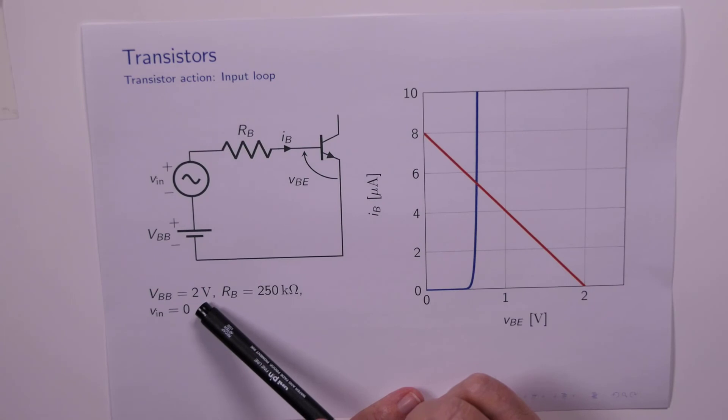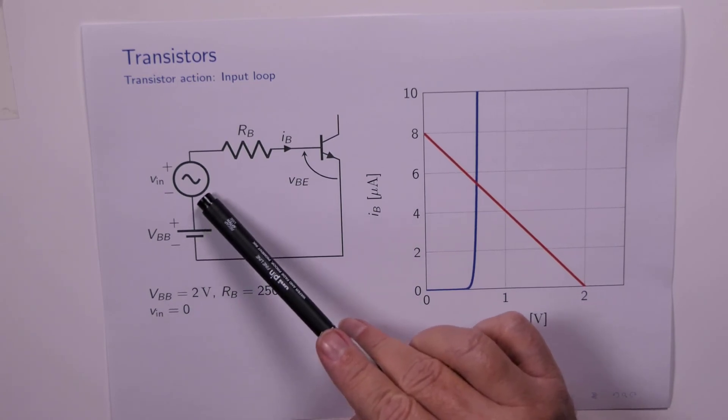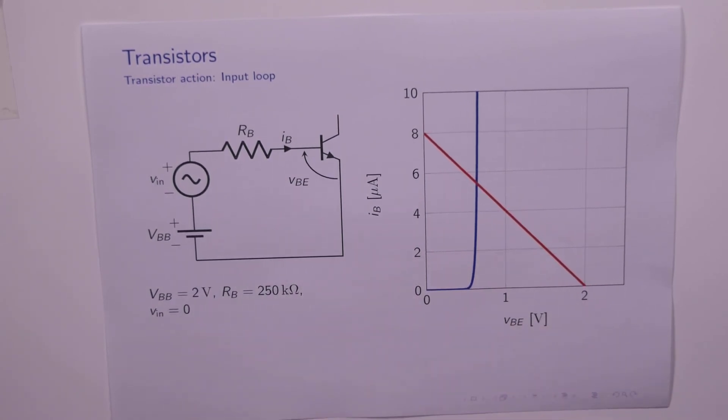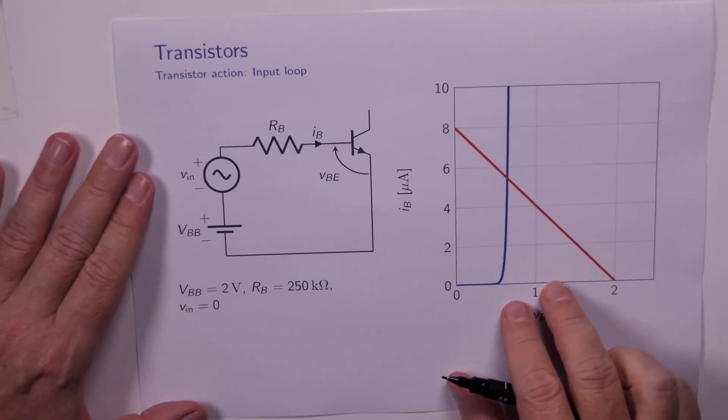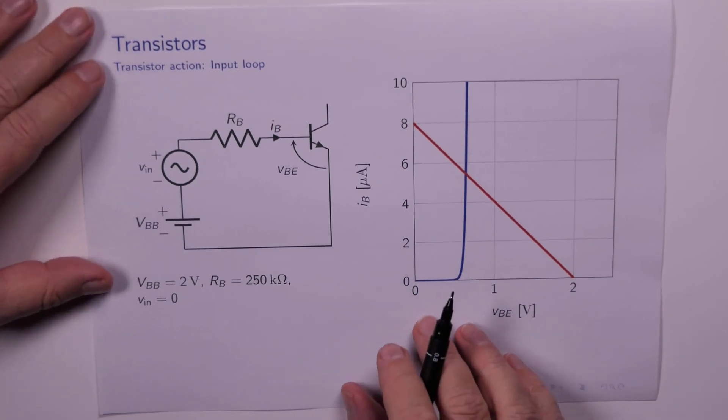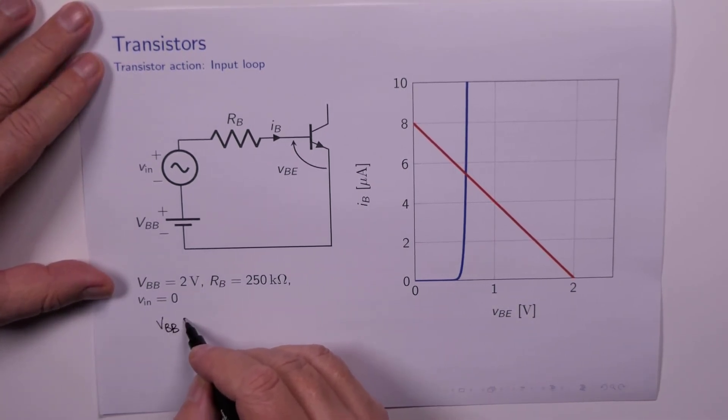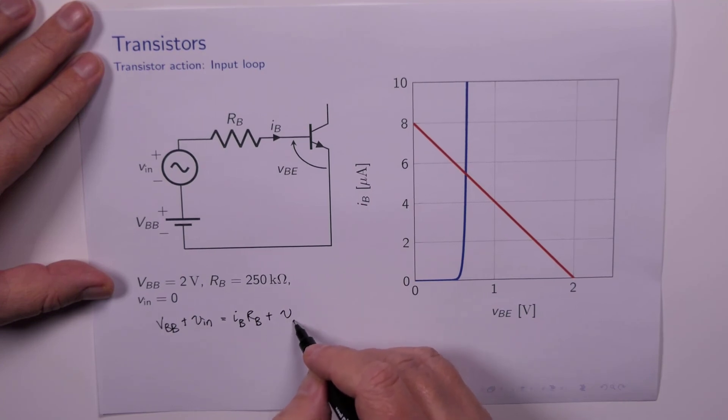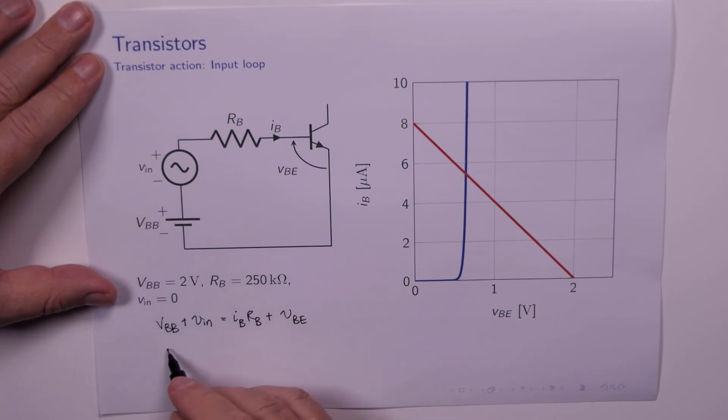I've even given some values here suggesting VBB is 2 volts, RB is 250k, and initially we're going to assume that VIN is equal to 0. Now I can write down Kirchhoff's voltage law for this input loop. I can say that VBB plus VIN equals IB times RB plus VBE. Now from this I can write an expression for IB. I can isolate IB. IB equals VBB plus VIN over RB minus VBE over RB.